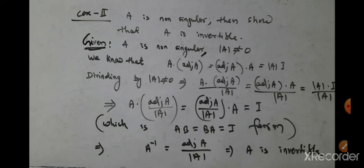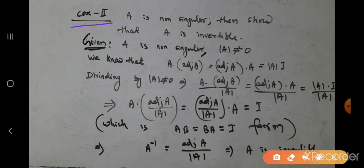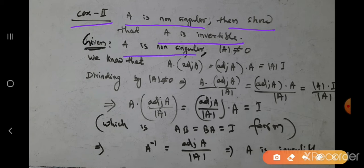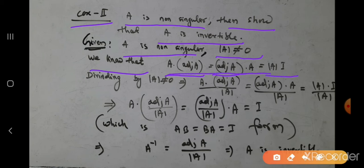Case 2 is the reverse of Case 1. We are given that A is a non-singular matrix, and we must show that A is an invertible matrix. Since A is non-singular, det(A) ≠ 0. We also know the identity: A · adj(A) = det(A) · I.